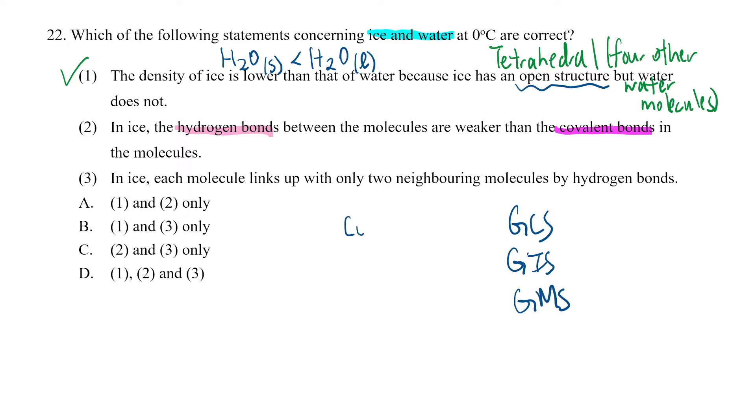These have covalent bonds, ionic bonds for giant ionic structure, and metallic bonds for giant metallic structure. Now these three are the strongest - they are stronger than hydrogen bonds.